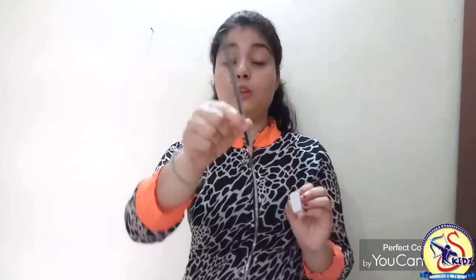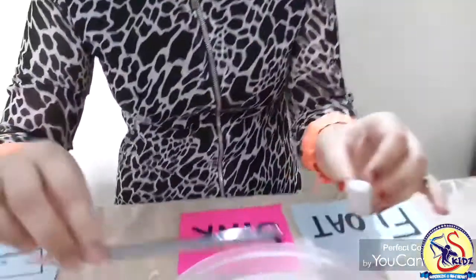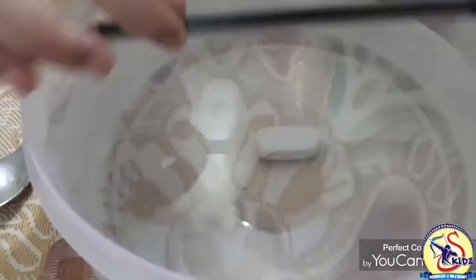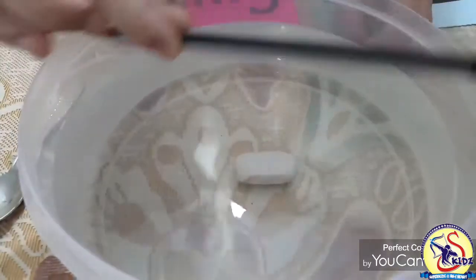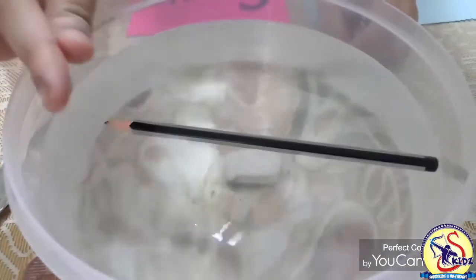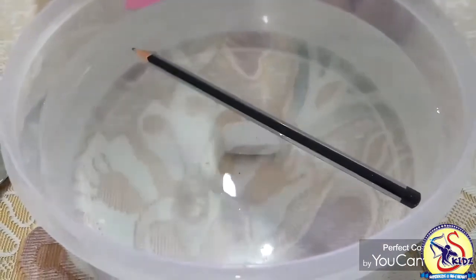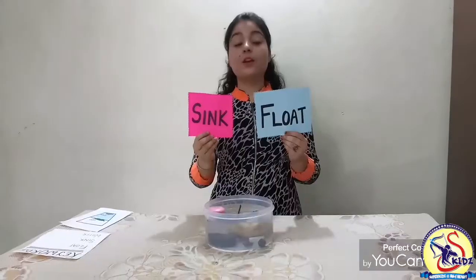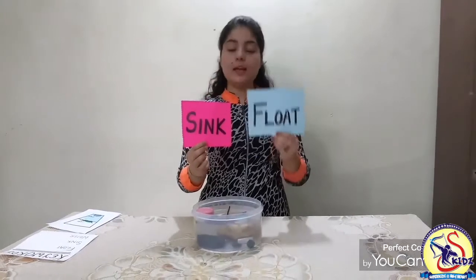Last example. Can you see this? This is a pencil — you all have it at home. And this is an eraser. Which one will sink and which one will float? The eraser sinks in water. What do you think about the pencil — will it float or sink? It floats on water. Pencil being light floats on water and eraser being heavy sinks in water. So now you are familiar with the concept of sink and float.